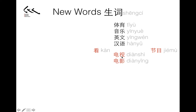电视 is the TV, television. And this one, 电影, these two are very easily confused words. 电视 is the television, and 电影 is the movie. I'll explain the difference a little bit later.